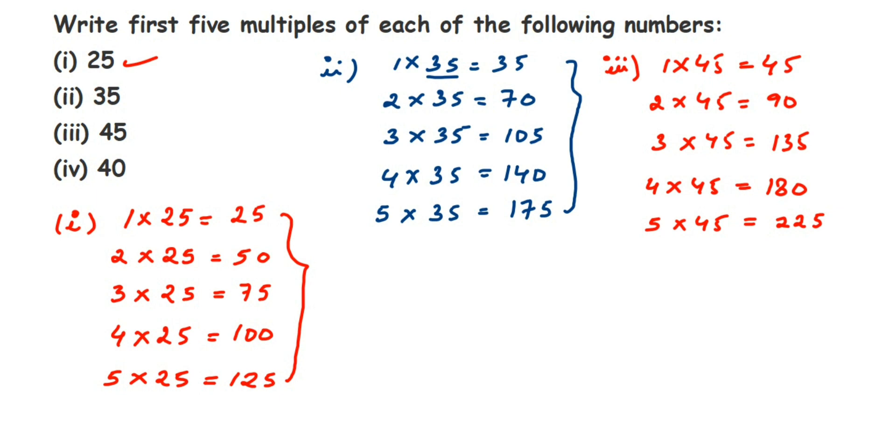Now here 45, 90, 135, 180, and 225 are the multiples of 45. And the last one here is 40.